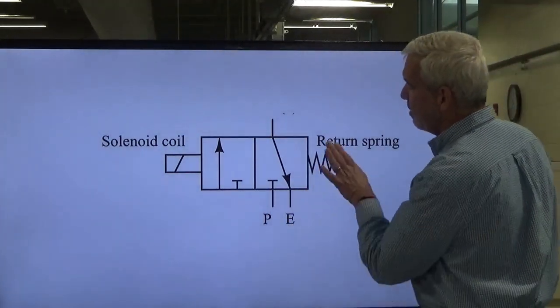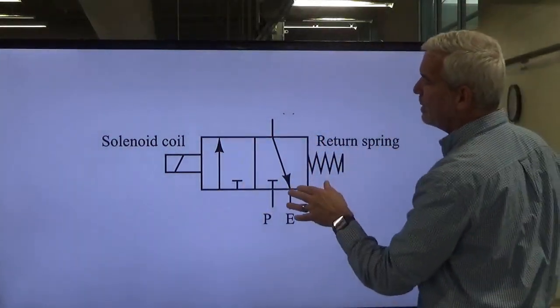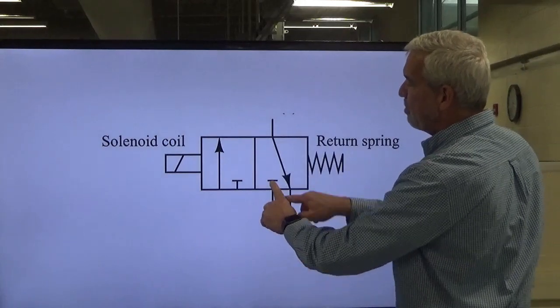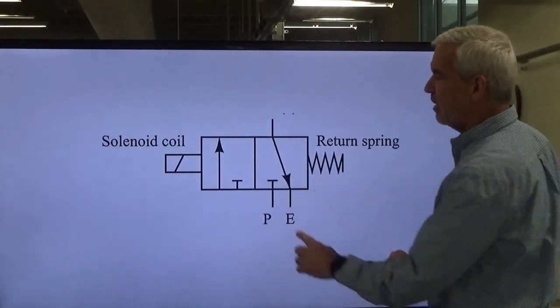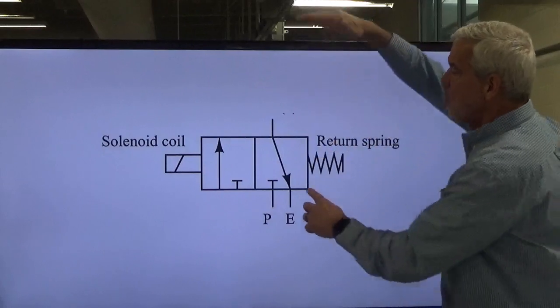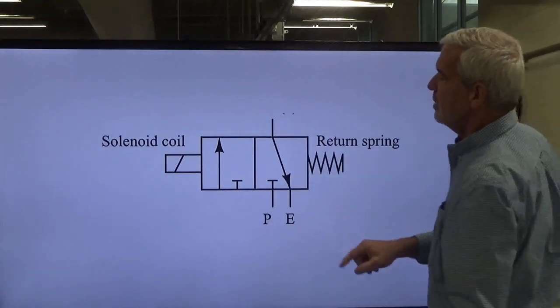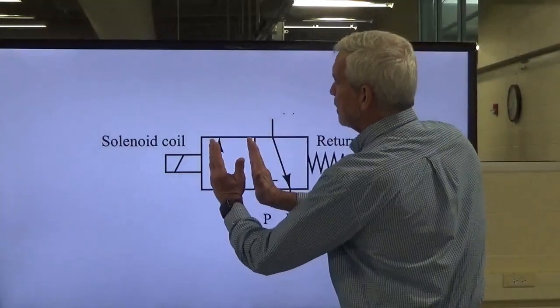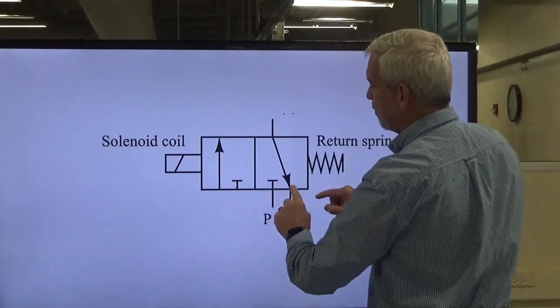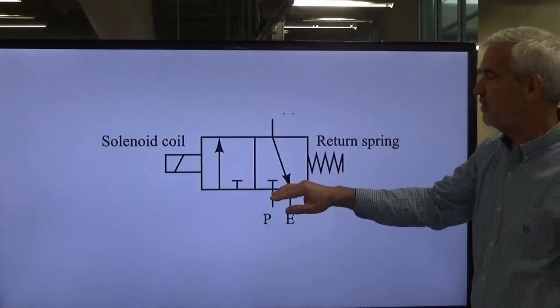These arrows mean pathways. This symbol is a spring, and the arrow through it tells us it's variable. You've got a solenoid on one side to move the valve body and a return spring to push it back. In this case we're de-energized, spring pressure is dominant. We're not allowing system pressure from our regulator to go anywhere - it's blocked. However, downstream pressure has a pathway to exhaust to atmosphere.